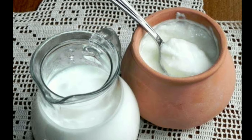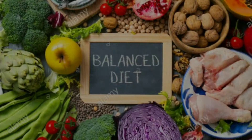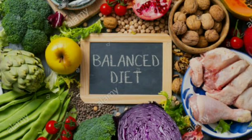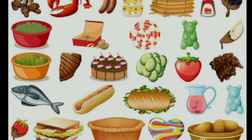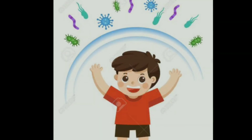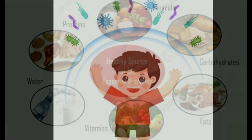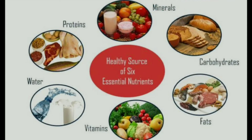Therefore, we need to take extra yogurt or buttermilk to restore their numbers. A Balanced Diet. All that we consume during the day is called our diet. A diet containing adequate quantities of all nutrients is called a balanced diet. To build a strong and healthy body, you need all nutrients in the right proportion and in sufficient quantities in your daily diet.